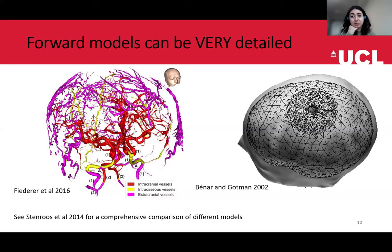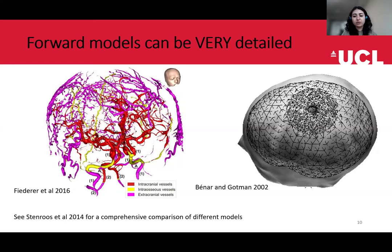There is really no limit to how detailed you can go, and people have been looking into that. A quite extreme example is a study where they included all the vessels and arteries under the skull and scalp in the head model — a very interesting study showing how much detail can go into head model design. Something more relevant for those interested in clinical applications: skull openings or burr holes generated after brain surgery also really affect the conductivity of different layers, and how that affects source localization accuracy is also quite relevant. There is another paper referenced here if you're interested in a comprehensive comparison between different types of head models.